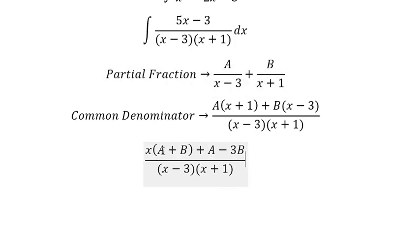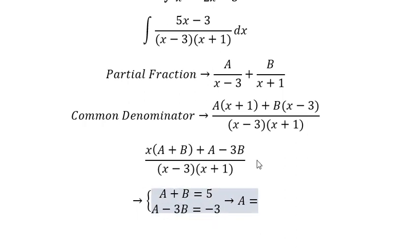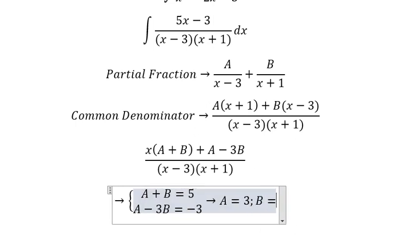Now let's compare coefficients. For x we have 5, so we have A + B = 5. And this one equals -3. So we get A = 3 and B = 2.